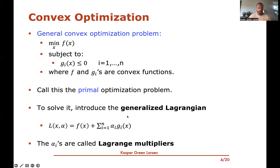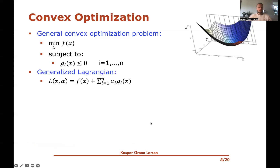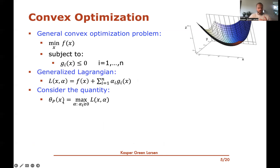With this generalized Lagrangian, we can look at a quantity denoted θ_p(x) — a function of a single argument x, similar to f up here. The value it takes is: for any given x, you choose the maximum over all alphas where all Lagrange multipliers alpha_i are non-negative. So θ_p(x) is the maximum over all choices of alpha of the value of the generalized Lagrangian at (x, alpha).